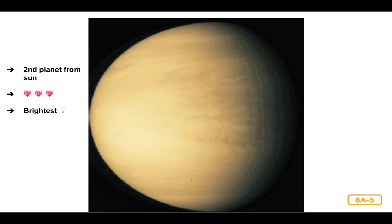It takes Venus roughly 225 Earth days to revolve around the Sun. However, like Mercury, Venus does not rotate on its axis very fast. In fact, Venus actually rotates in the opposite direction that Earth does.